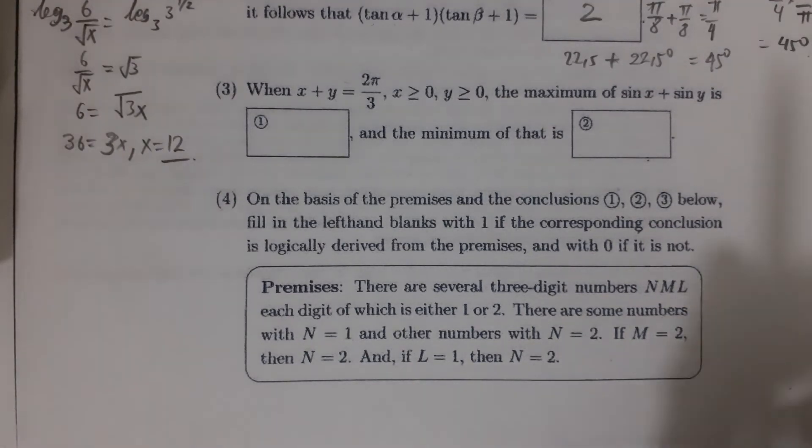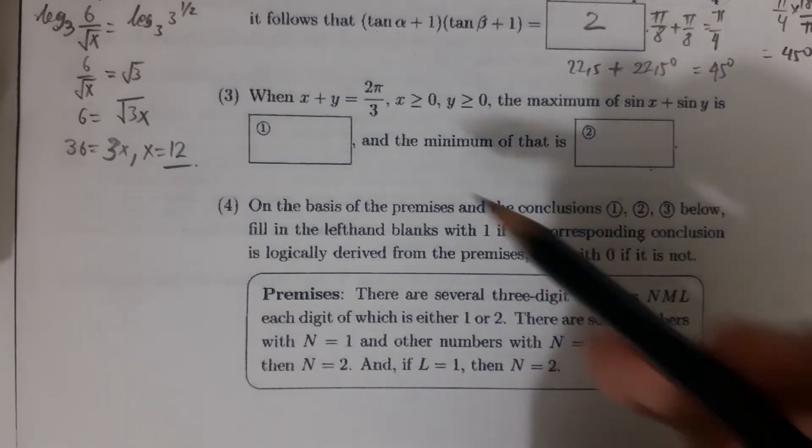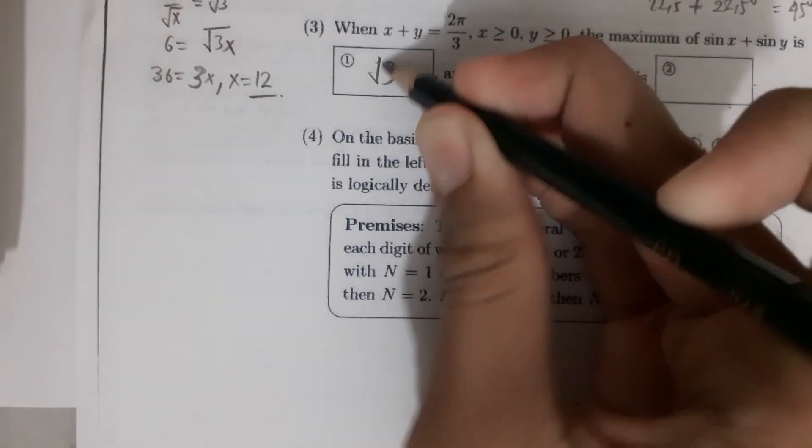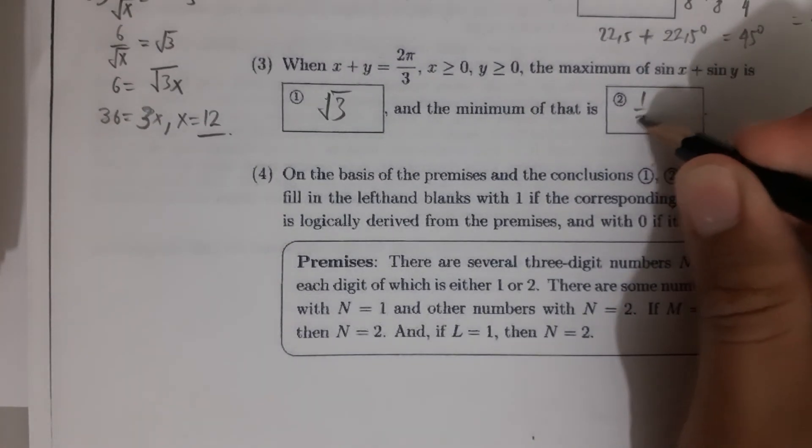Okay, so the maximum of sin x + sin y is √3, and the minimum is (√3)/2.